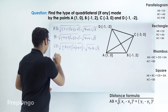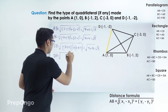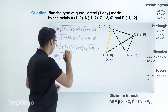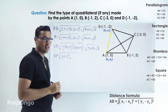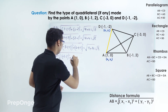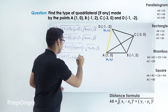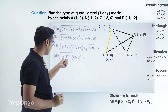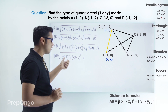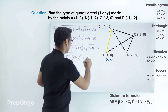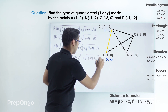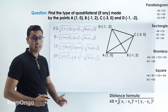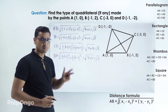Let's find the final length DA. Putting the values into the distance formula: (minus 1 minus 1) squared plus (minus 2 minus 0) squared. This gives (minus 2) squared plus (minus 2) squared, which is 4 plus 4, so DA is also coming out to be root 8. Since all four side lengths are equal, we can say it must be a rhombus. Now we have to check for square, so we need to find the diagonals as well.